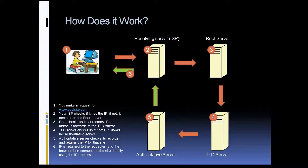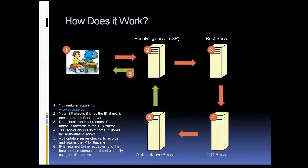Now the root servers contain information for all of the top-level domains — all of the .com servers, .net, .edu, .biz. There are hundreds of TLDs available, and the root servers keep track of all those. So the root server will check its local cache and say, 'I don't have the IP for that site, but I do know where the .com servers are.'